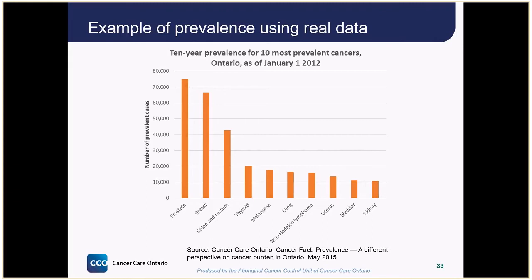We see that although lung cancer is common, its prevalence is lower, mainly because this type of cancer is usually caught late and its survival is worse.